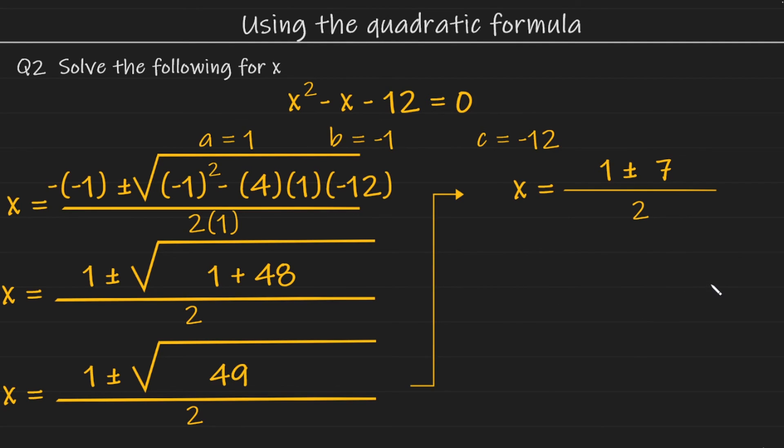So we have x is equal to 1 plus 7 over 2, and x is equal to 1 minus 7 over 2. If we simplify these once more, we should get our answers. So on the left hand equation here, we have 1 plus 7, which is 8. 8 divided by 2 is 4. So that is one of our solutions. x is equal to 4.